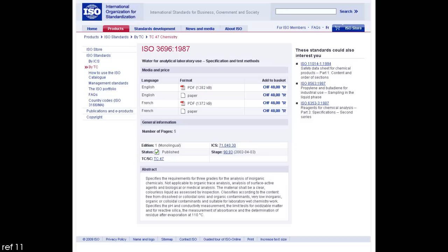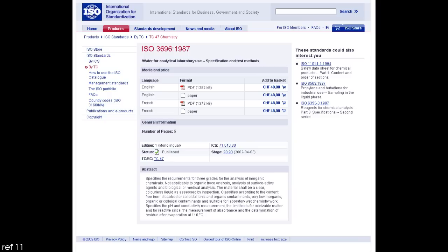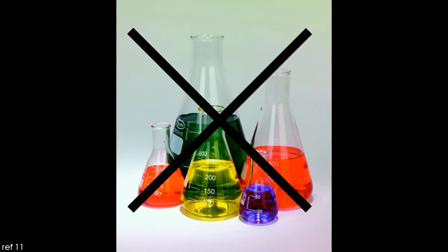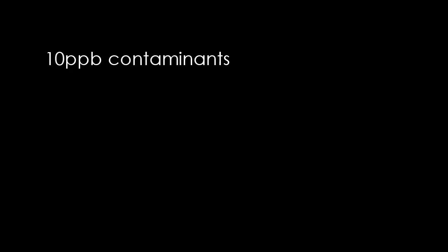The International Standards Organisation has standards for water purity. The most pure water grade in ISO 3696 basically allows for 10 parts per billion of contaminants. With this level of purity, the water cannot be stored in a glass or plastic container, as these containers will leach contaminants from the container wall.